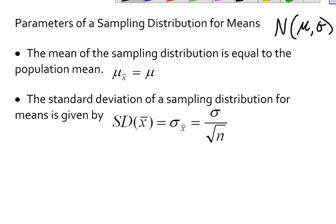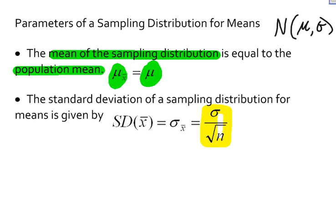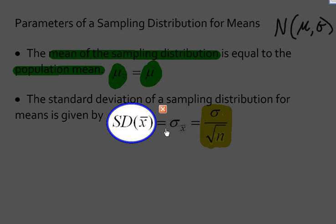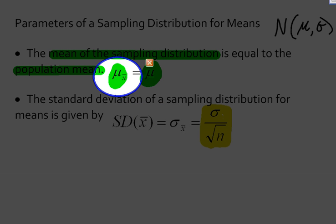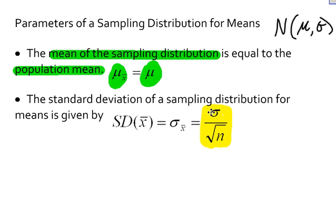There are two truths. First, the mean of the sampling distribution is equal to the population mean — whatever the parameter for the population mean is, the sampling distribution will have a mean equal to it. Second, the standard deviation of a sampling distribution for means is given by the formula: the population standard deviation divided by the square root of the sample size, written as sigma over the square root of n. These symbols represent the mean and standard deviation of a sampling distribution for means.